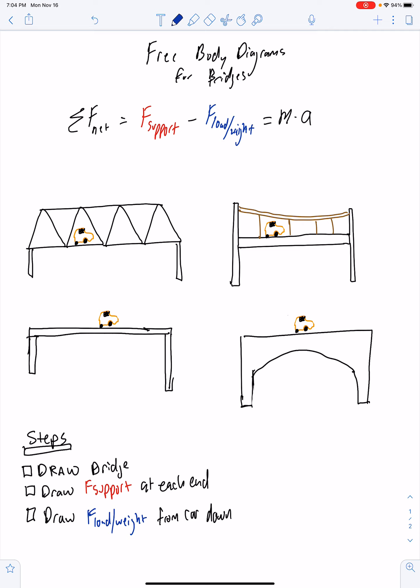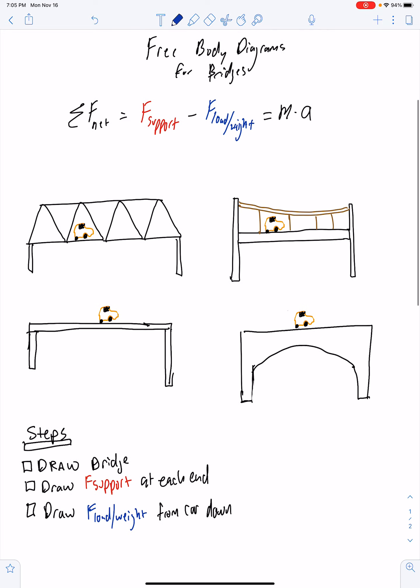So the first part you're going to do is just draw your bridge. So like one of these example bridges here, just give a representation of what your bridge looks like, and then go ahead and draw a little car on the bridge that's going to be a representation of our load.